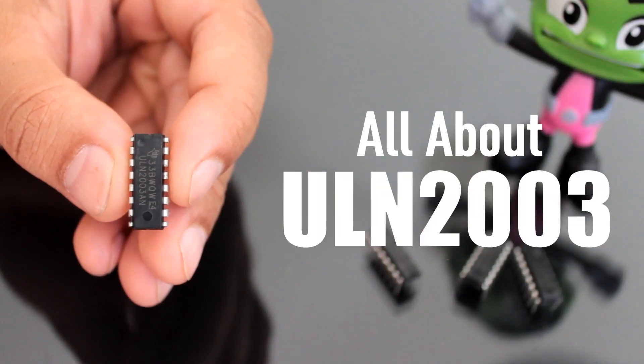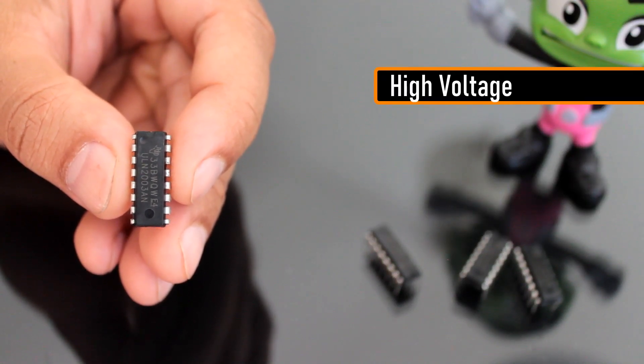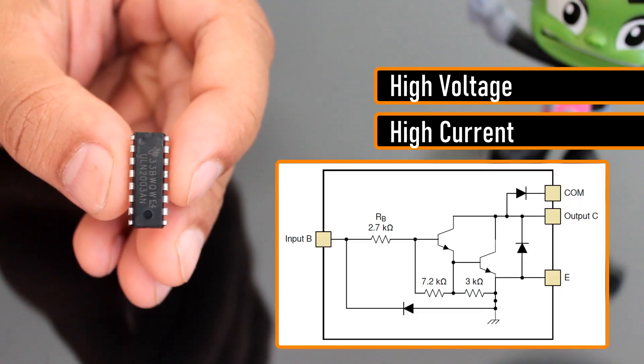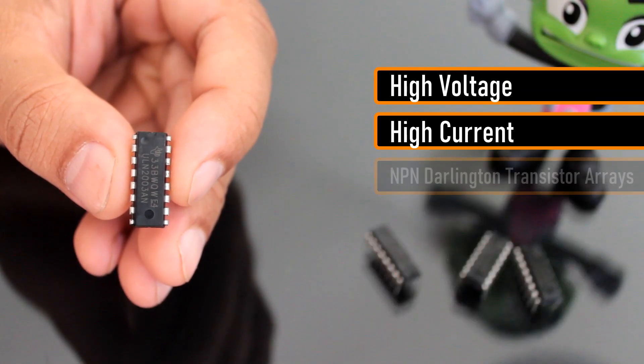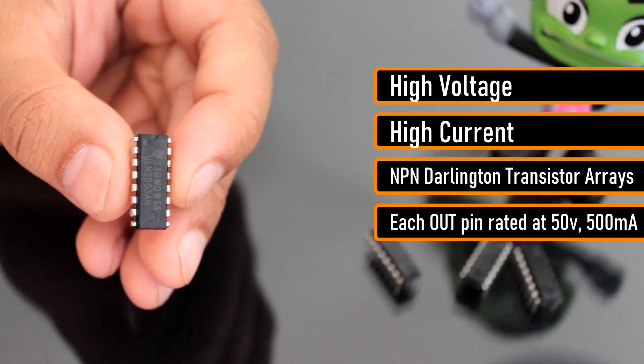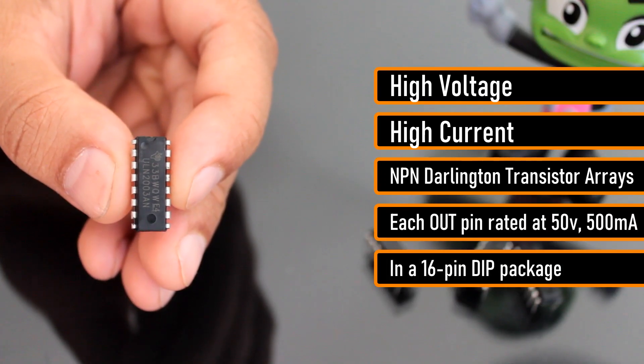The ULN 2003 IC consists of 7 high voltage, high current NPN Darlington transistor arrays, each rated at 50V, 500mA in a 16-pin DIP package.